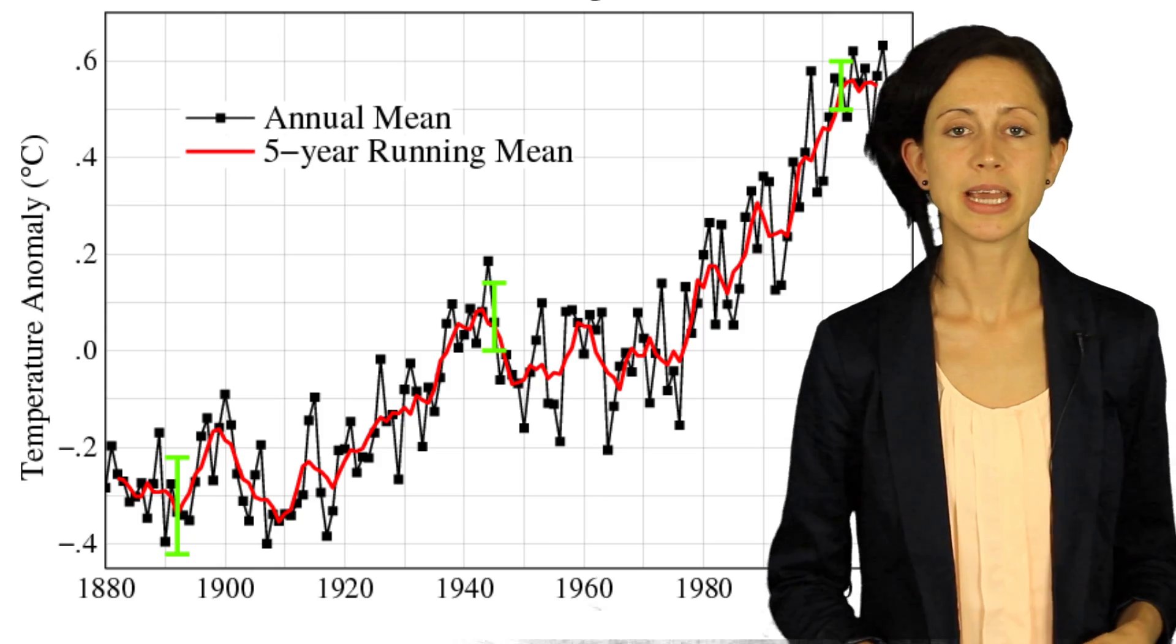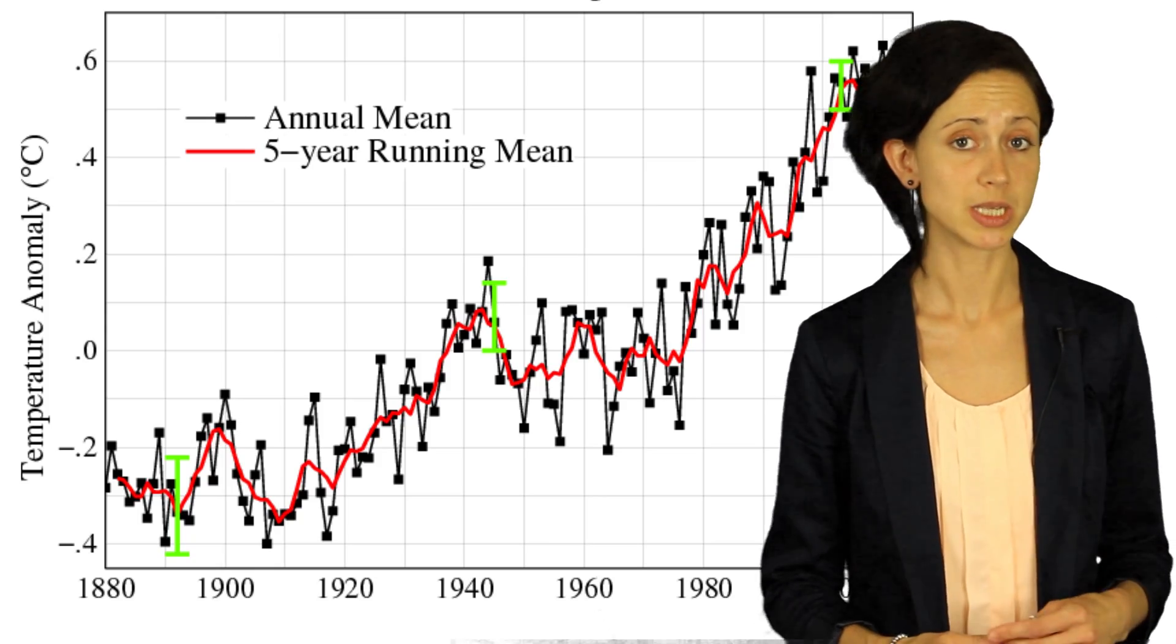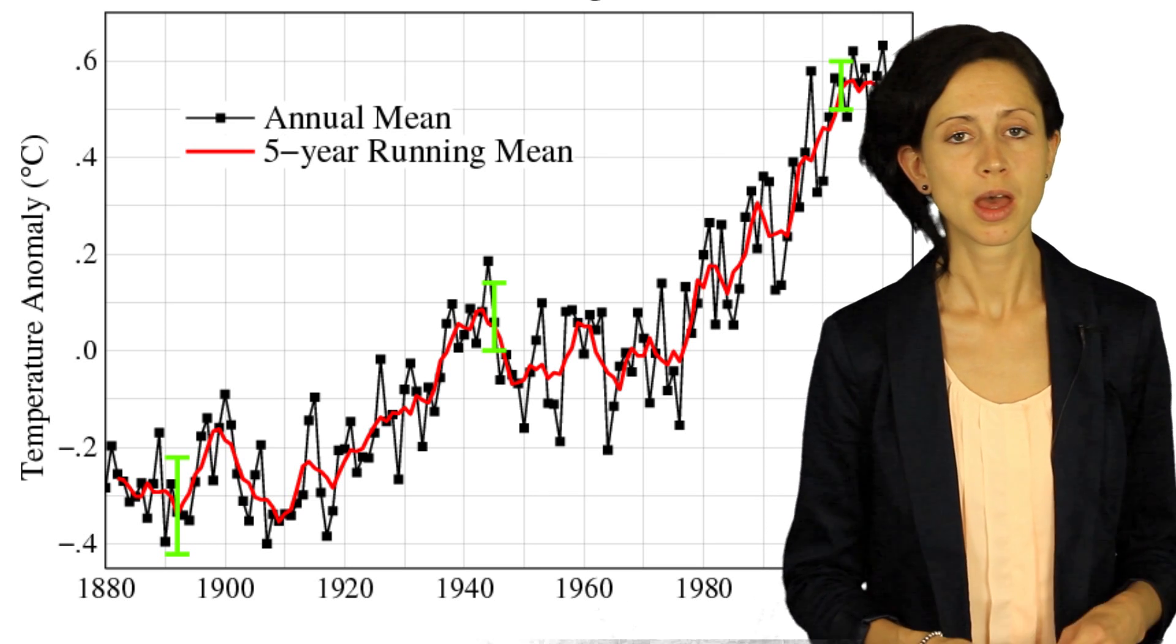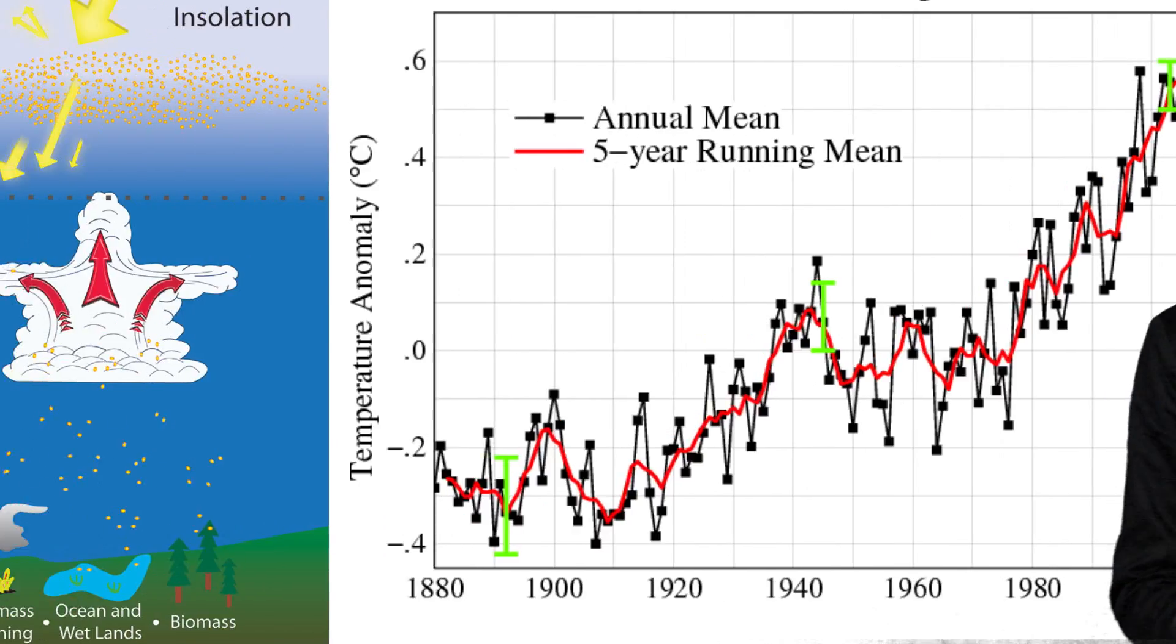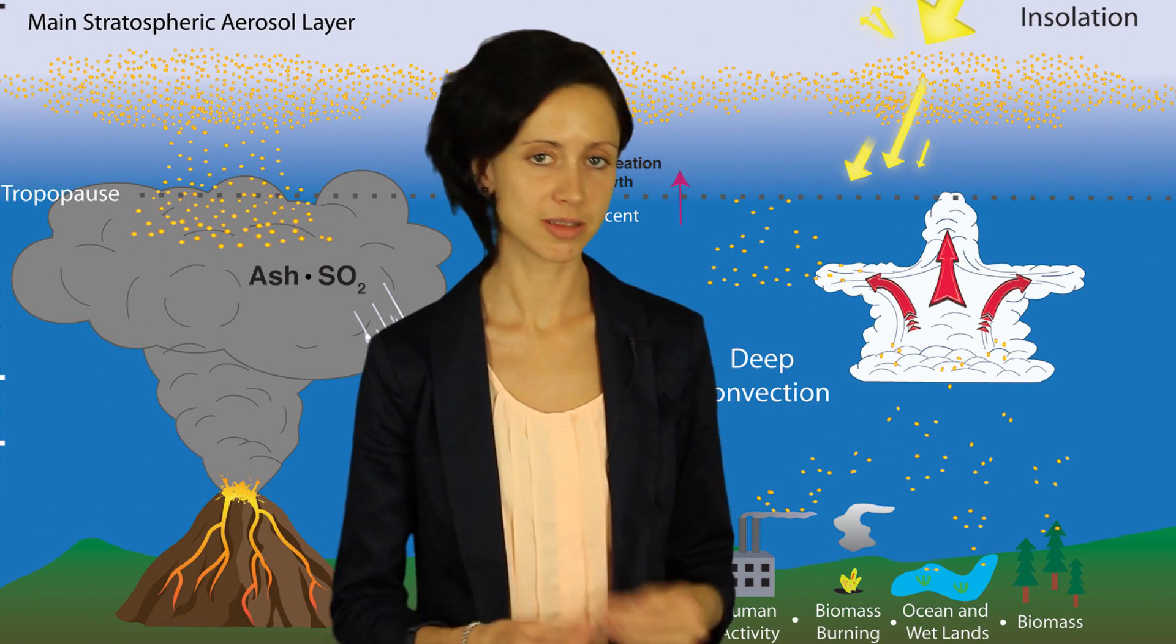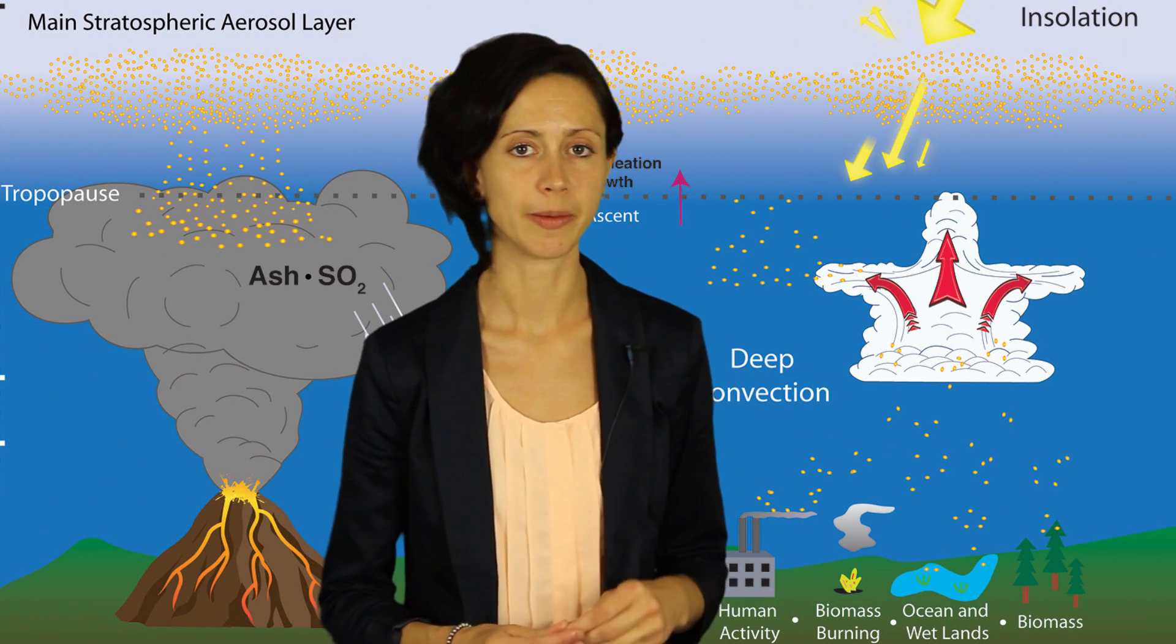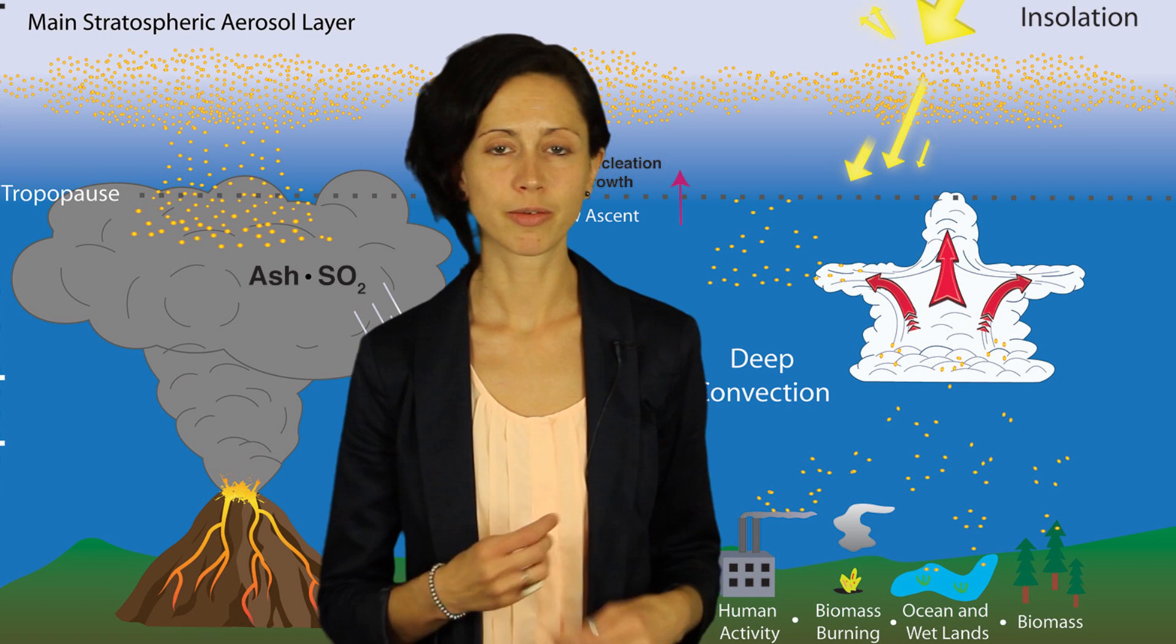At KNMI, we do not only do weather research, but we also research climate. Climate is the average weather over a period of 30 years. Climate, like weather, is always changing. Since the 1850s, it has been changing more rapidly though. Global temperatures are rising and more extremities in weather occur. What interests me most are tiny particles in our atmosphere. As tiny as they are, they can influence climate.